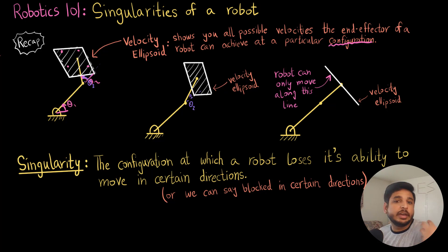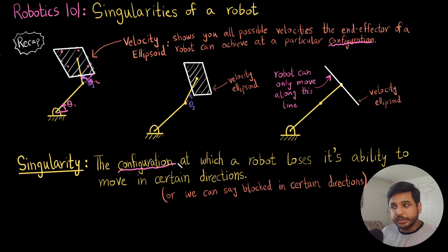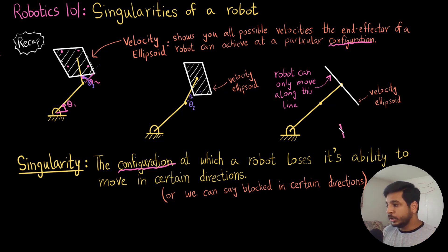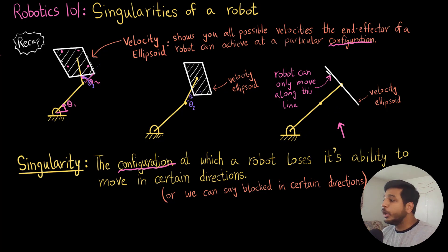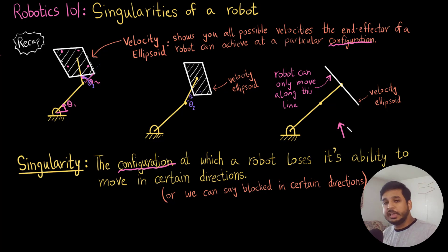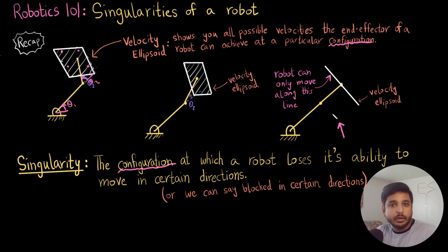The robot gets blocked in certain directions. It is a particular configuration at which the robot loses its ability to move in a certain direction. In this case, the configuration is when theta_2 becomes 0. Theta_1 can be any angle — 0, 90, 180, or any arbitrary angle — it doesn't matter. As long as theta_2 is 0, the velocity ellipsoid always becomes a straight line. So the singularity point for this robot is when theta_2 equals 0 degrees.